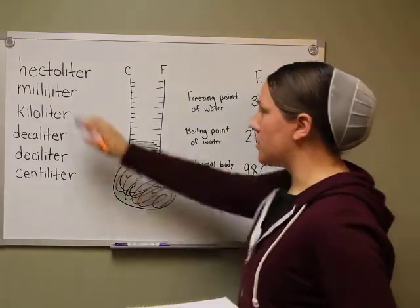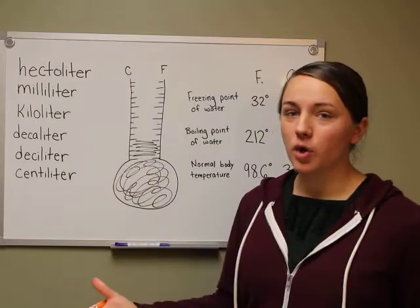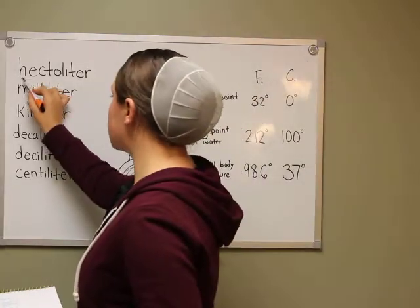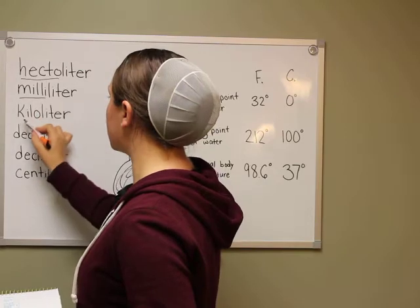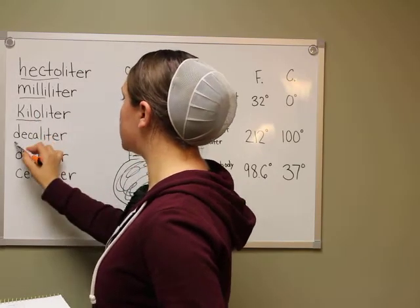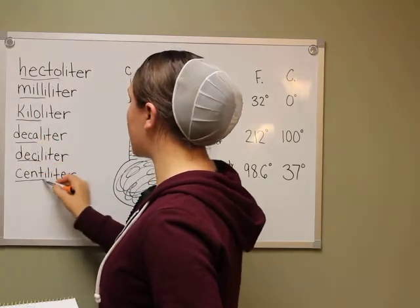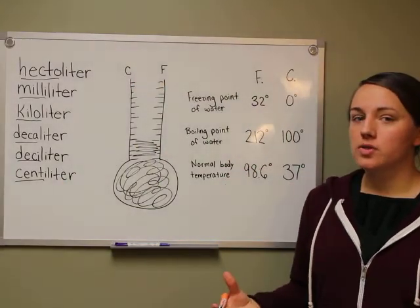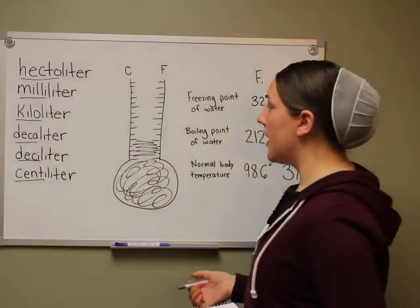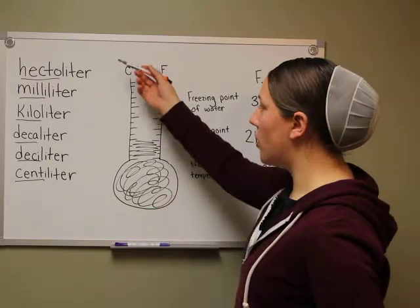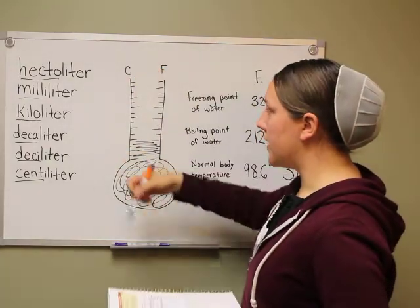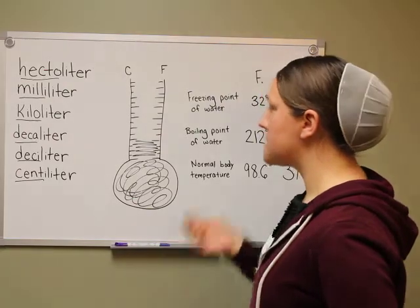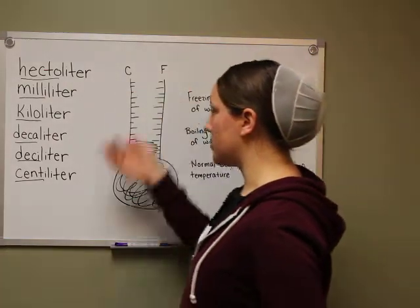We have worked with our metric prefixes a lot. Hopefully you know most of these. The prefixes themselves are the first part of all of these words: hecto, milli, kilo, deca, deci, and centi. Hopefully you remember what most of those mean. And we're just going to go over these metric units of capacity and the metric prefixes.